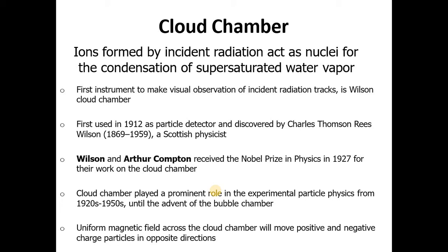The first instrument to make visual observation of incident radiation tracks is known as Wilson cloud chamber, which we are studying now. This chamber was first used in 1912 as a particle detector and was discovered by Charles Thomas Rees Wilson, a Scottish physicist. Wilson and Arthur Compton received the Nobel Prize in Physics in 1927 for their work on the cloud chamber. Cloud chamber played a prominent role in experimental particle physics from 1920s to 1950s until the advent of the bubble chamber.